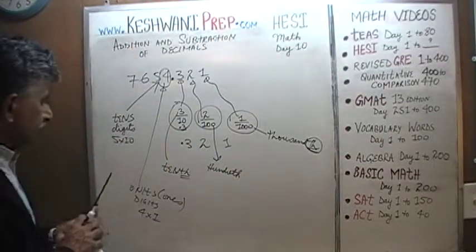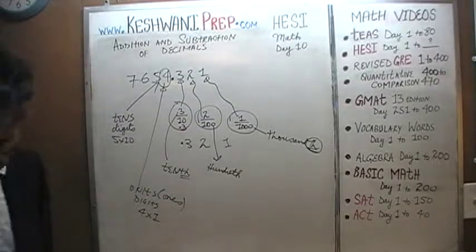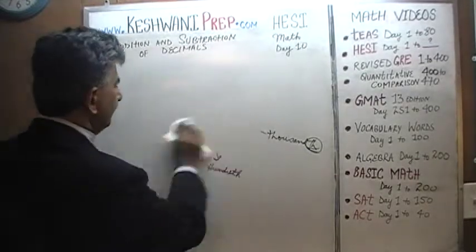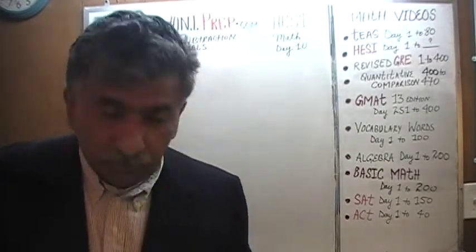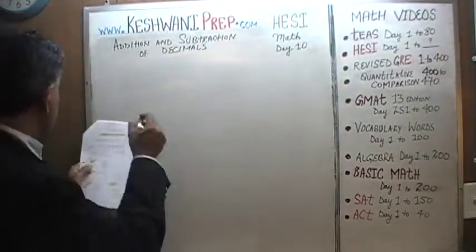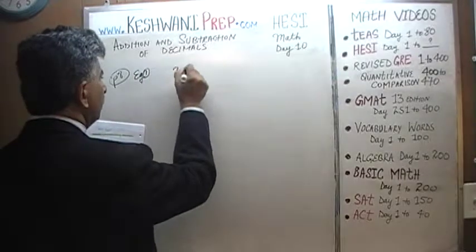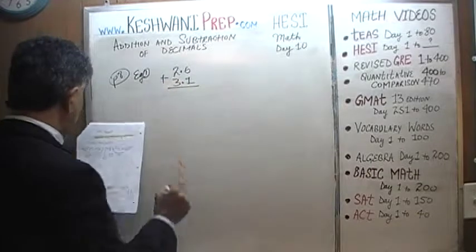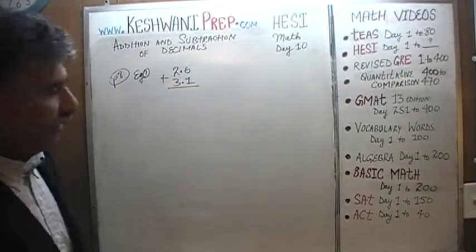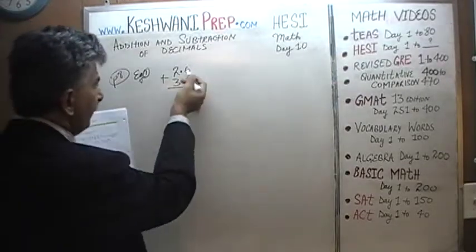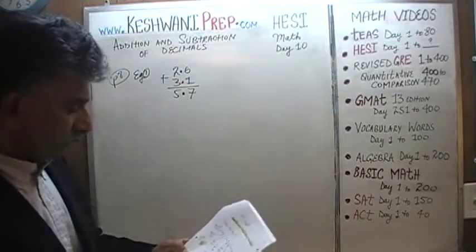Let's keep going. We are going to do the problems on page number 9. Actually, the very first problem appears at the very bottom of page number 8. Example number 1 says 2.6 plus 3.1. Adding two numbers with decimals is no different than adding without. It is the same as adding 26 and 31 — you just have to keep track of your decimals. Line them up: 6 plus 1 is 7, and 2 plus 3 is 5. As long as you keep your work clean, it is very straightforward.